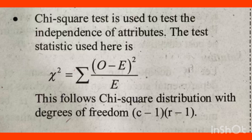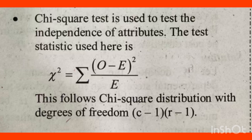After z-test and t-test, we come to the chi-square test. Chi-square is a non-parametric test used to test the independence of attributes. The test statistic is: χ² = Σ (O - E)² / E. The chi-square test follows degrees of freedom calculated as (r - 1)(c - 1).